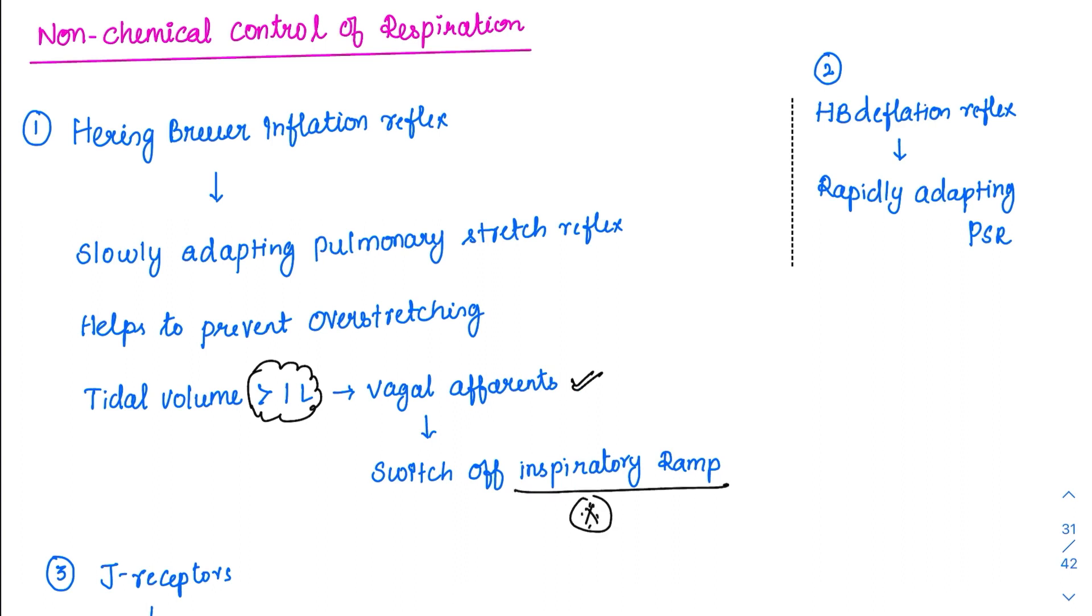Because continuous inspiration is not so good, we need an expiration to happen. So it is sensed by the slowly adapting pulmonary stretch receptors and they send through it to the vagus.